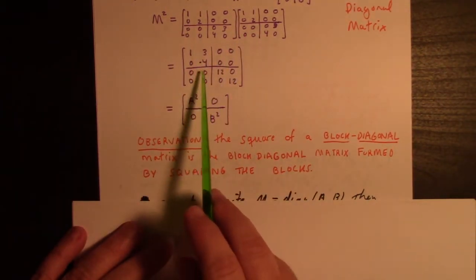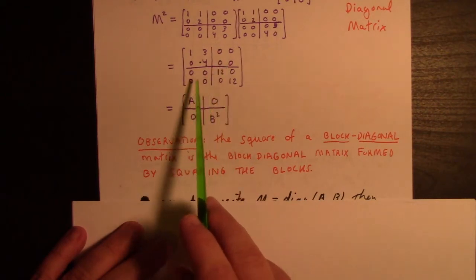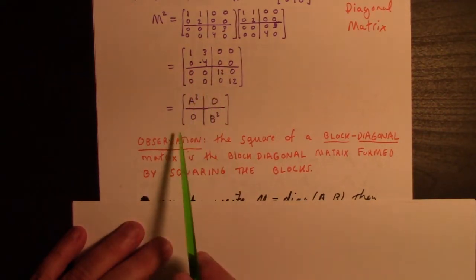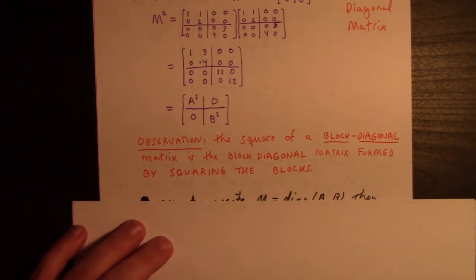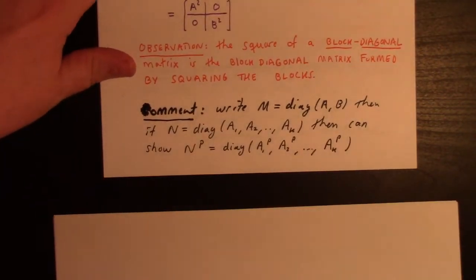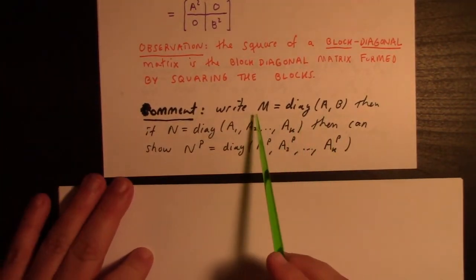That's exactly A squared, zero, zero, B squared. So we have the observation: the square of a block diagonal matrix is a block diagonal matrix formed by squaring the blocks. We can write M = diag(A, B) as notation for it.